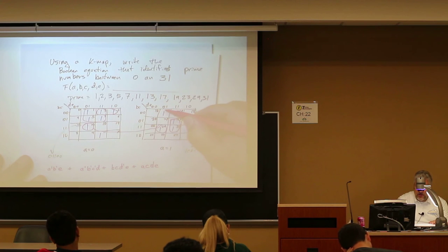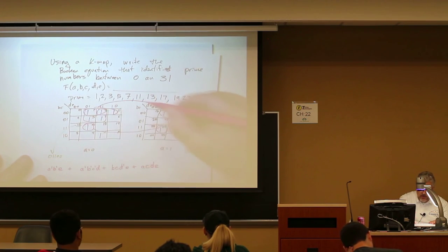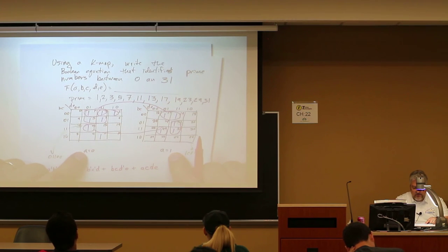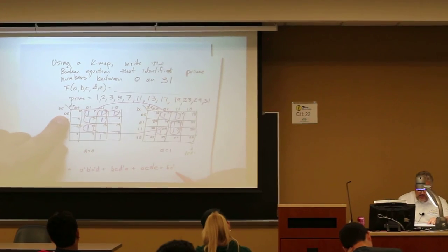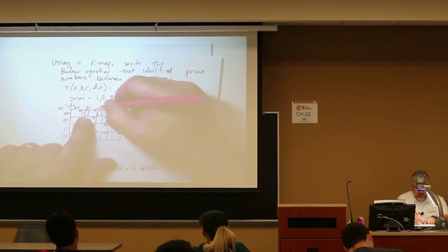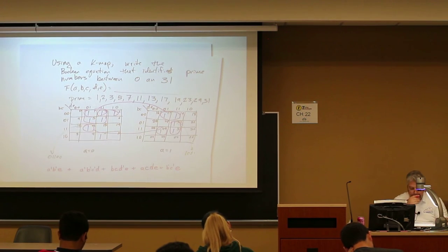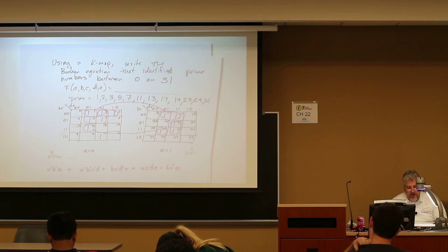And then remember, we're going to circle this one along with this one. So in this case, A doesn't matter. But in this case, we have B prime C prime. And D doesn't matter, but we have E is equal to one.